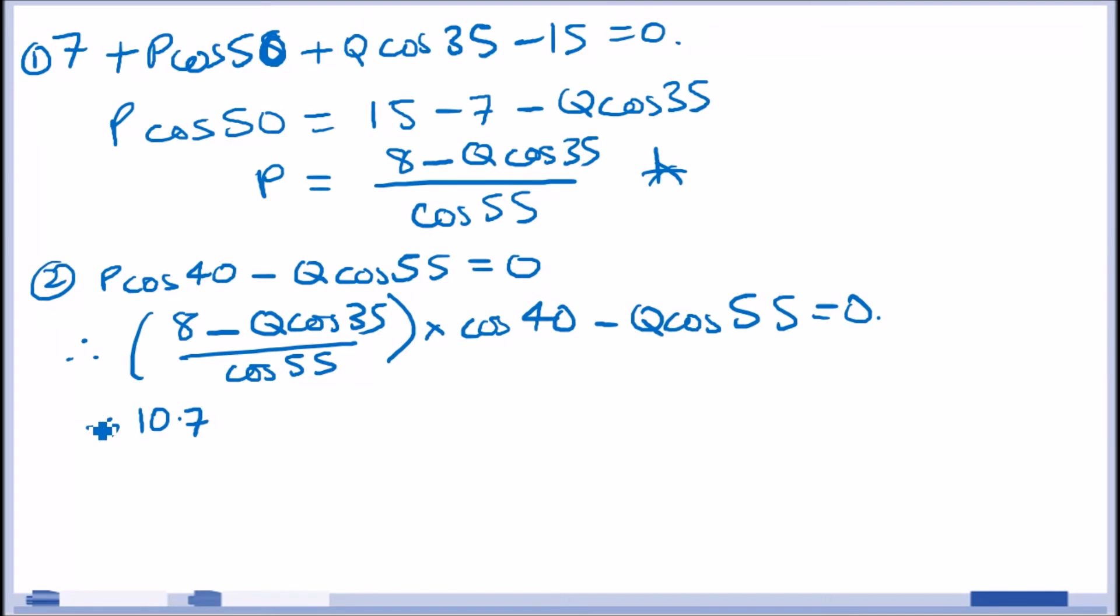Again, we'll do the same thing. Cos 35 over cos 55 times cos 40. So, guys, this is just pretty much flexing your algebra muscles here. Cos 35, it does take a few steps, I admit. Times cos 40. This will give us, we've got times minus Q. So, we're minus 1.1 Q. I'm just going to round to 1 decimal place. Usually, you shouldn't do this. Minus and then cos 55. You can keep it there if you want. Q cos 55 equals 0.